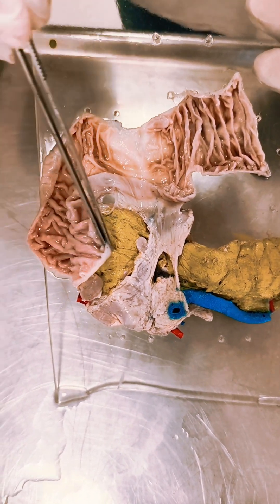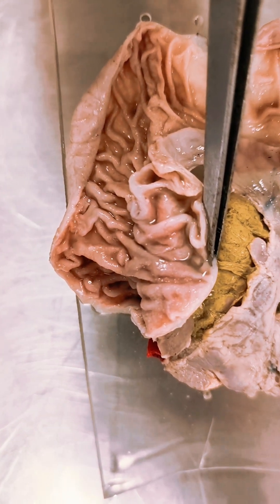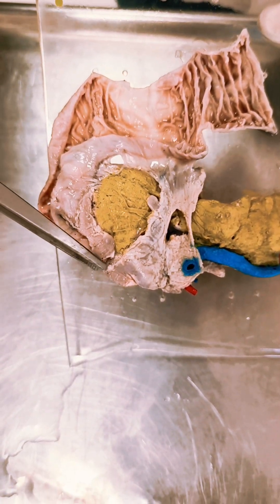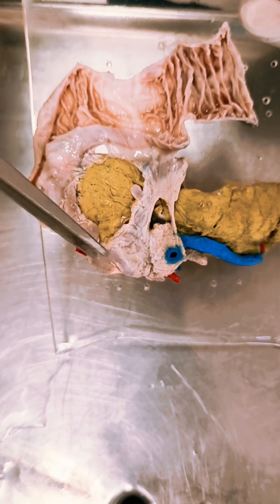Inside here you can see the parts of the duodenum: the first part, second part, third part, and fourth part of the duodenum.